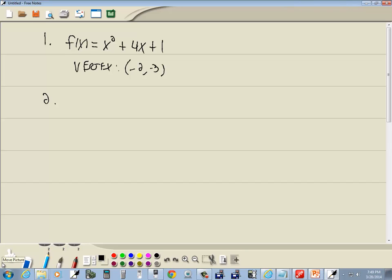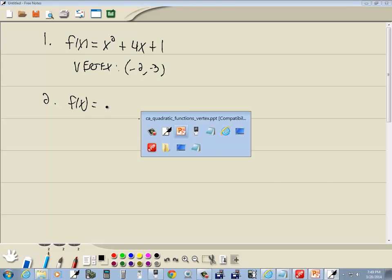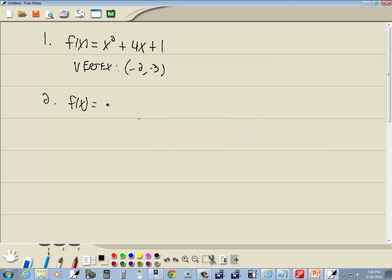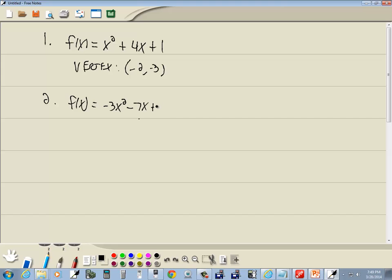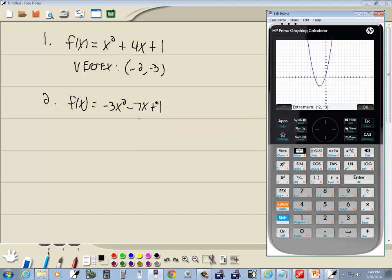Okay, so we got f(x) = -3x² - 7x + 1. So let's go graph that.